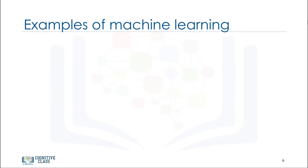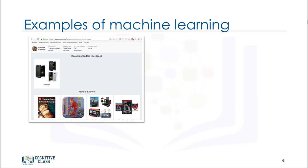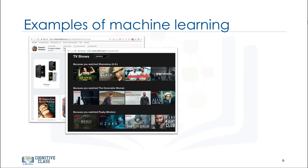Machine learning impacts society in a very influential way. Here are some real-life examples. First, how do you think Netflix and Amazon recommend videos, movies, and TV shows to its users? They use machine learning to produce suggestions that you might enjoy.